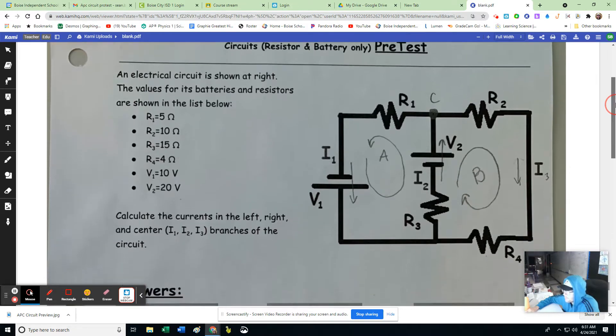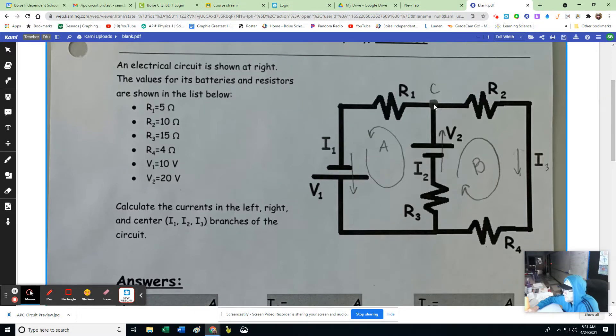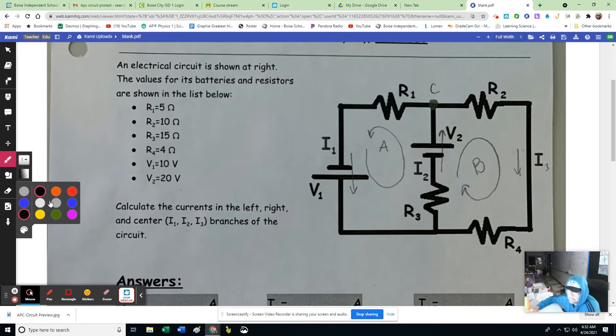So here's how I set it up. I'm going to use Kirchhoff's current law that says current in to a node is equal to the current out. Maybe I could be a little more clear about this. So I'm claiming my current 1 direction as being this way.